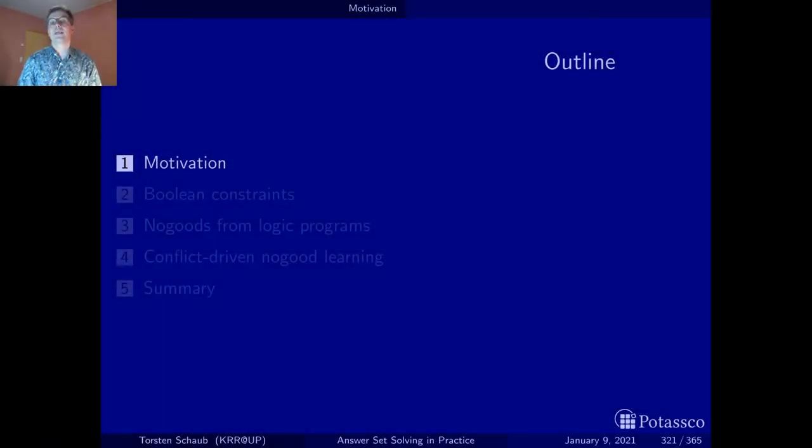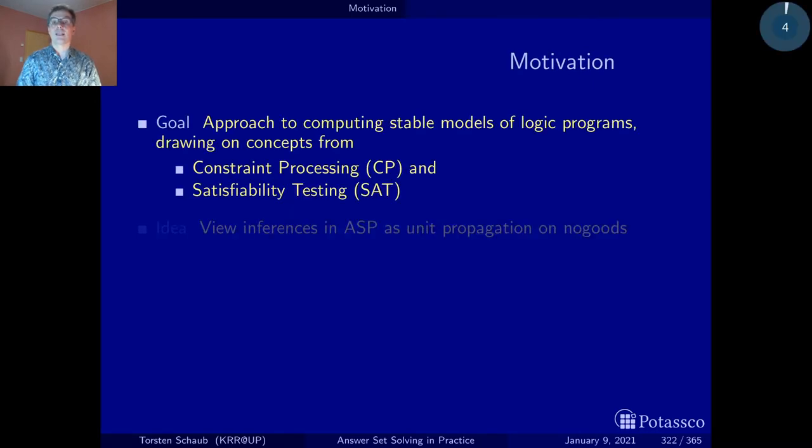This approach to ASP solving relies on concepts and lessons learned from the area of constraint processing and satisfiability testing. They are also interested in solving combinatorial search problems. That is, they look for assignments of values to variables such that a given set of constraints is satisfied. Satisfiability testing is a special case of constraint processing in which the range of variables is restricted to two, namely true and false, while in constraint processing that can be arbitrary things like integers, natural numbers, you name it.